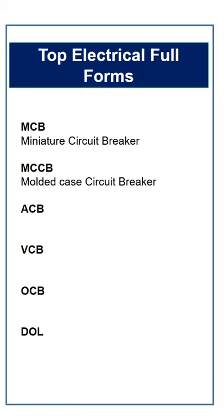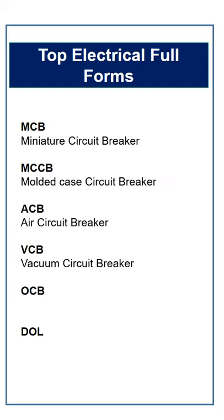ACB: the full form of ACB is air circuit breaker. VCB: the full form of VCB is vacuum circuit breaker. OCB: the full form of OCB is oil circuit breaker.